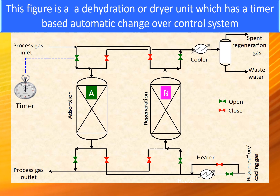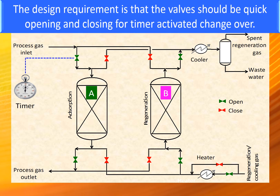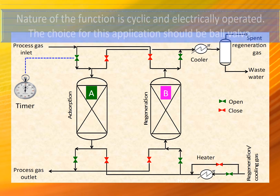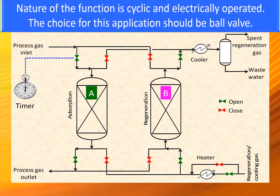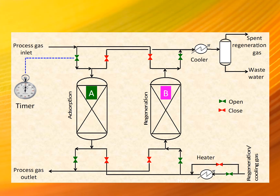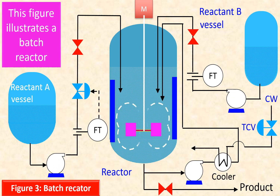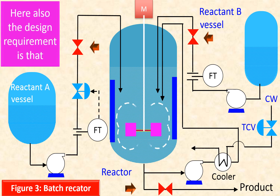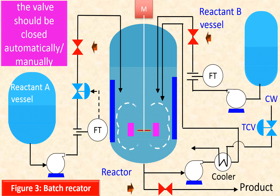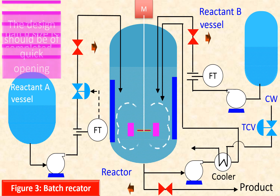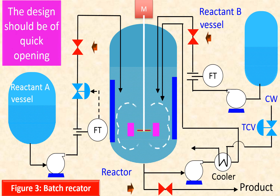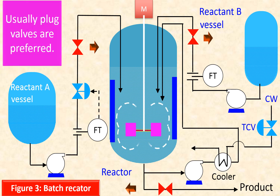This figure is a dehydration or dryer unit with a timer-based automatic changeover control system. The design requirement is that the valve should be quick opening and closing for timer-activated changeover. The nature of the function is cyclic and automatically operated — the choice for this application should be a ball valve. For the batch reactor, the design requirement is also that the valve should be closed automatically or manually when the batch size is completed, with quick opening capability. Usually plug valves are preferred for this application.